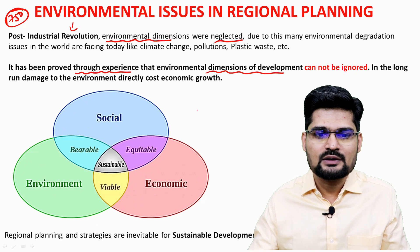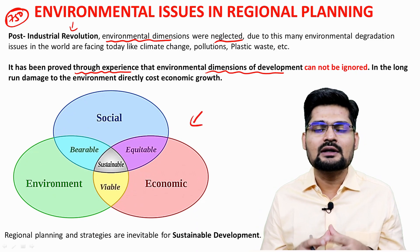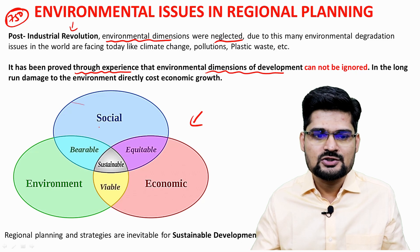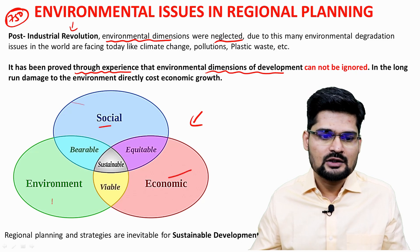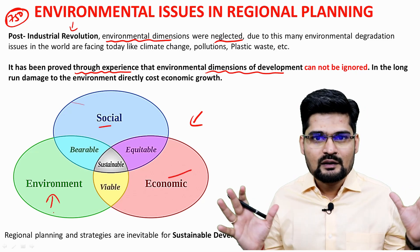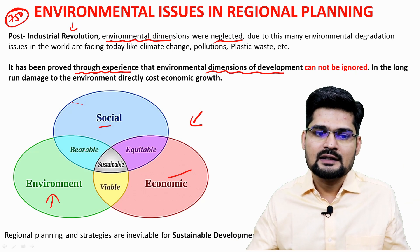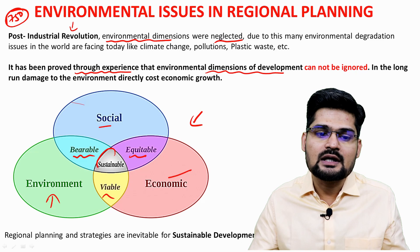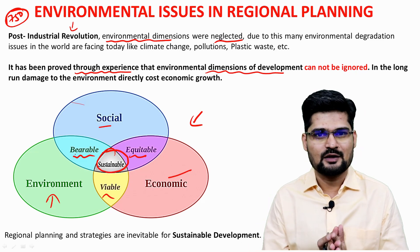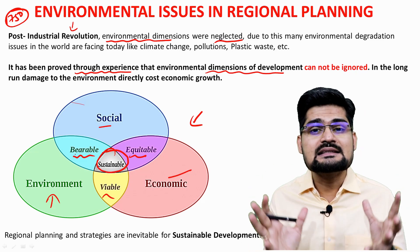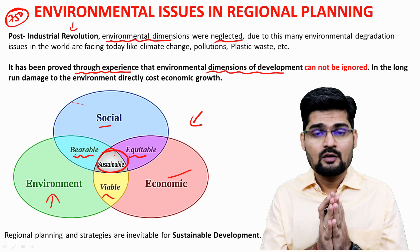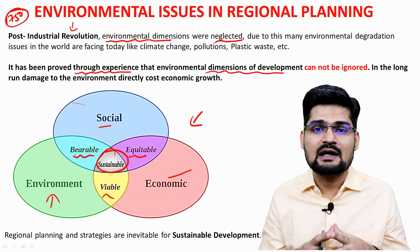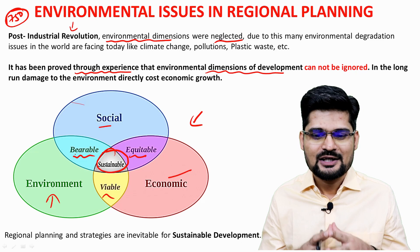This flow diagram talks about the overlapping nature of these dimensions in regional planning: social dimension, economic dimension, and environmental dimension. When they come together, in their overlaps they are bearable, equitable, and viable — and then they become the sustainable part of development. To attain sustainable development goals, we need to address the environmental issues of regional planning.